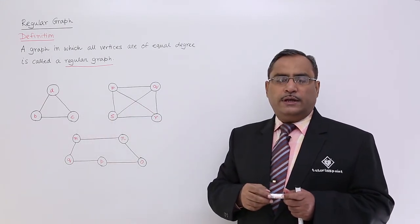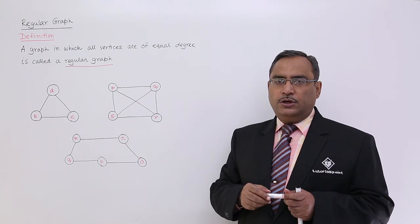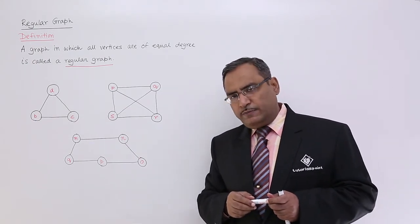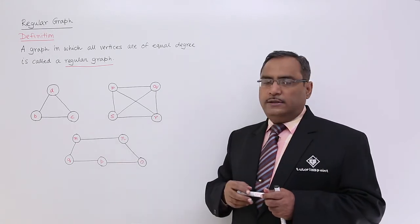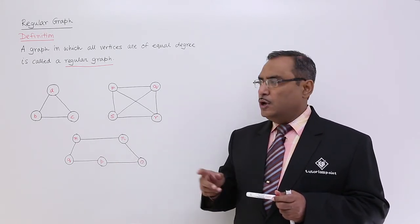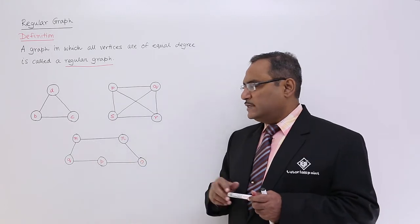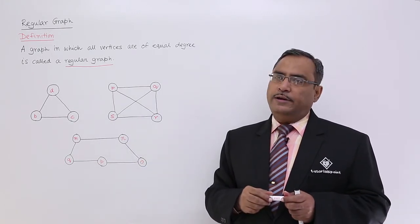Here each and every node has three edges connected, so degree for each vertex or node is 3. In this case, the value is 2. Degree for each vertex is 2 and that is same for all the vertices, and that is why it is called a regular graph.